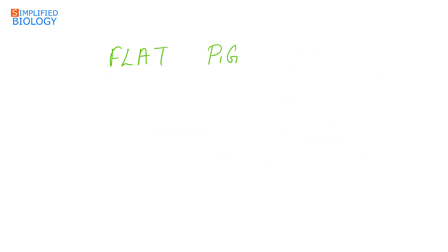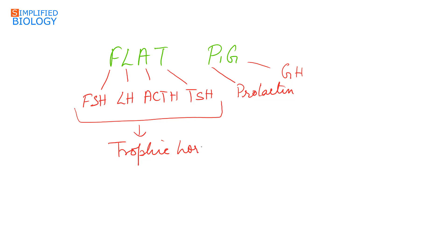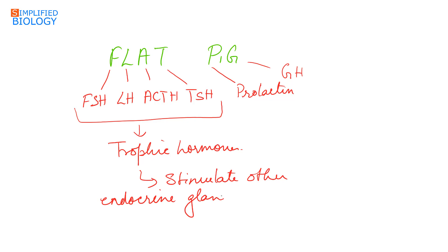The hormones of the anterior pituitary can be remembered by the mnemonic FLAT PIG: F is FSH, L is LH, A is ACTH, T is TSH, P is prolactin, and G is growth hormone (GH). The hormones of FLAT — FSH, LH, ACTH, and TSH — are tropic hormones, meaning they stimulate other endocrine glands to secrete hormones, while prolactin and GH are direct hormones.